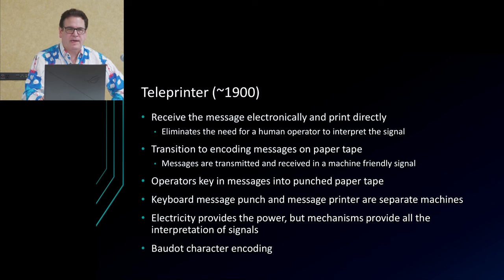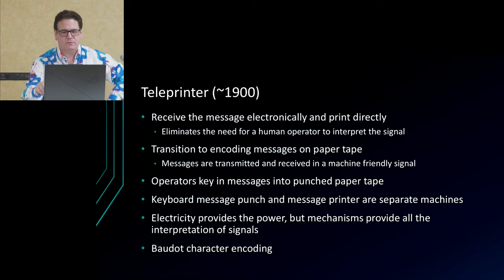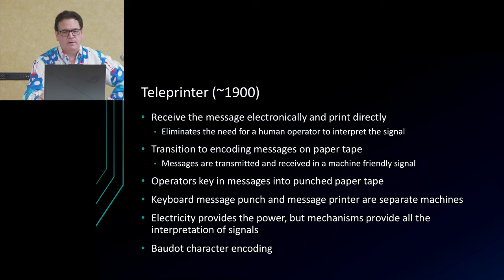That's where we started to get into mechanization of the telegraph. The first thing that shows up is a teleprinter — a device that receives signals and prints letters on a tape. If you've ever seen old stock ticker machines in a movie, that's an example of a teleprinter.